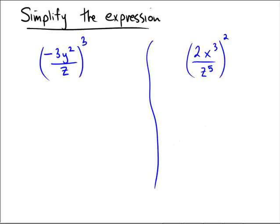Time to simplify some expressions here. We're going to use a particular rule - the distributive property for exponentiation through multiplication and division, and also the power rule, which is a to the b to the power of c equals a to the bc.